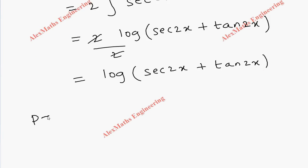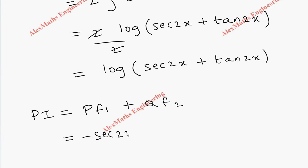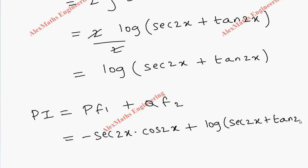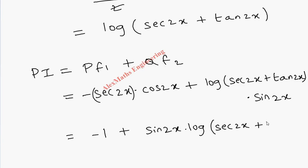So the particular integral is p·f₁ + q·f₂ = -sec(2x)·cos(2x) + log|sec(2x) + tan(2x)|·sin(2x). Since sec(2x) = 1/cos(2x), sec(2x)·cos(2x) = 1, so the particular integral simplifies to -1 + sin(2x)·log|sec(2x) + tan(2x)|.